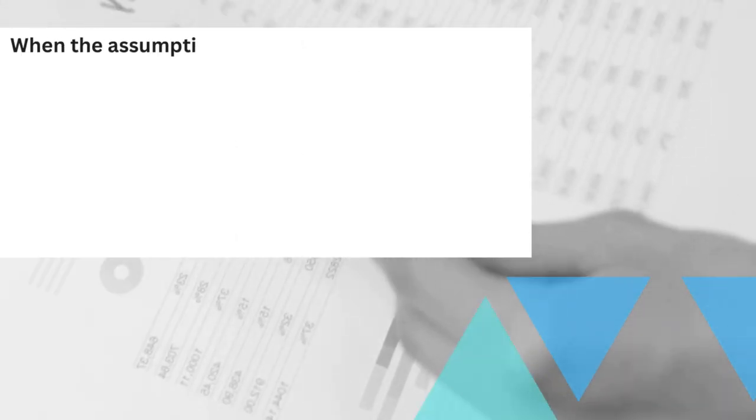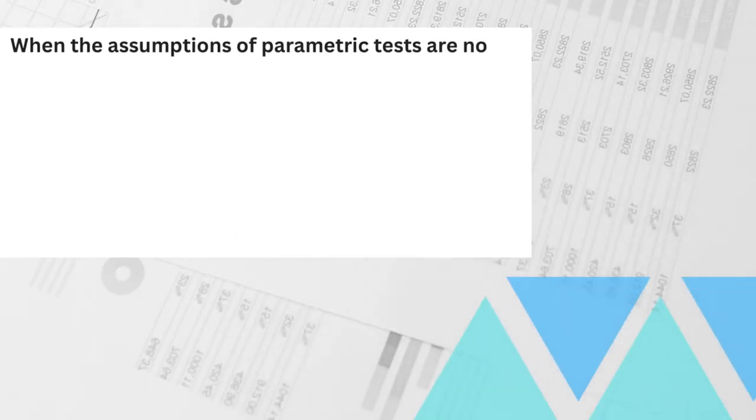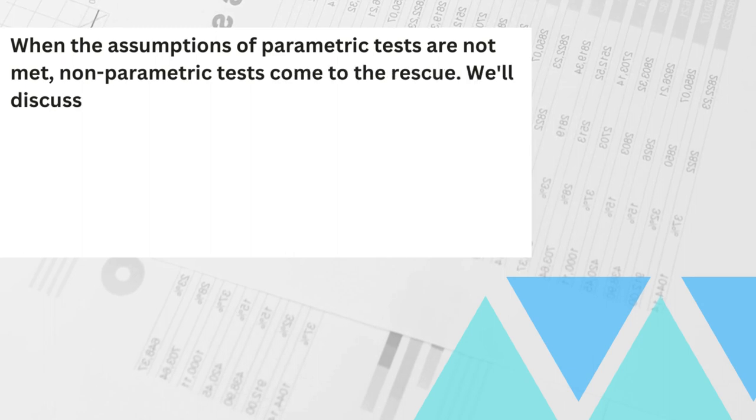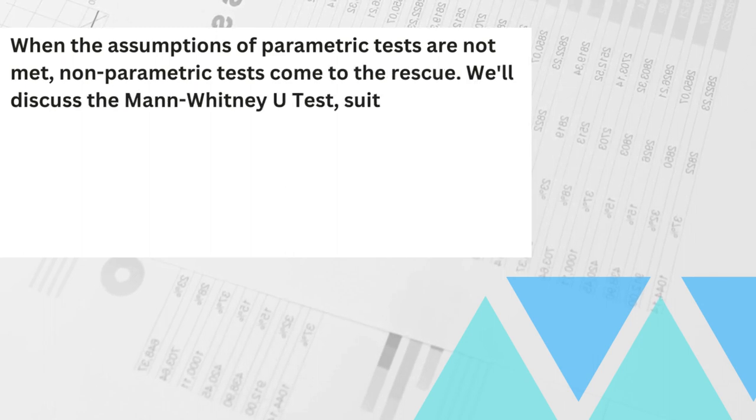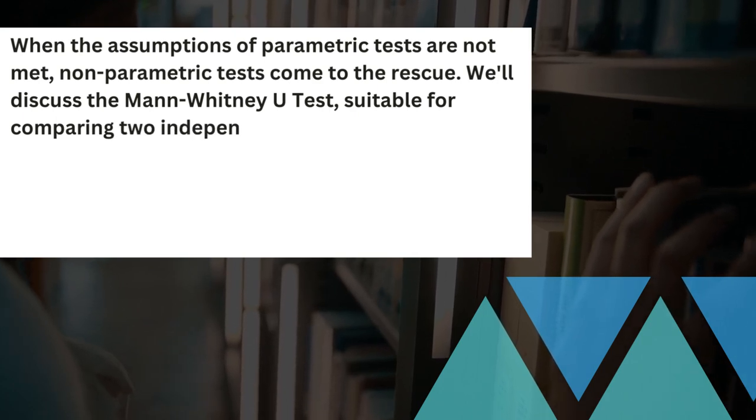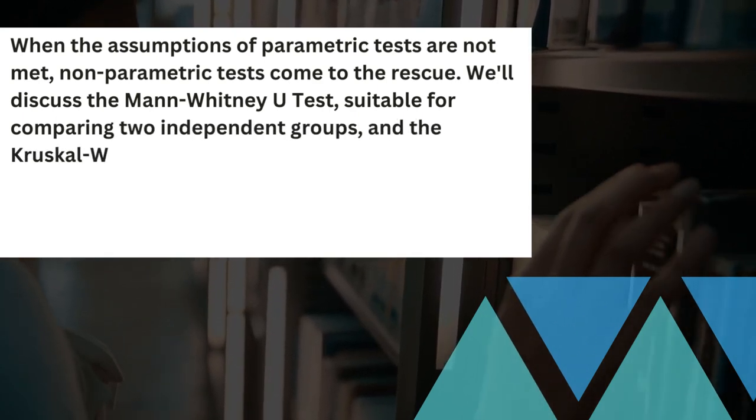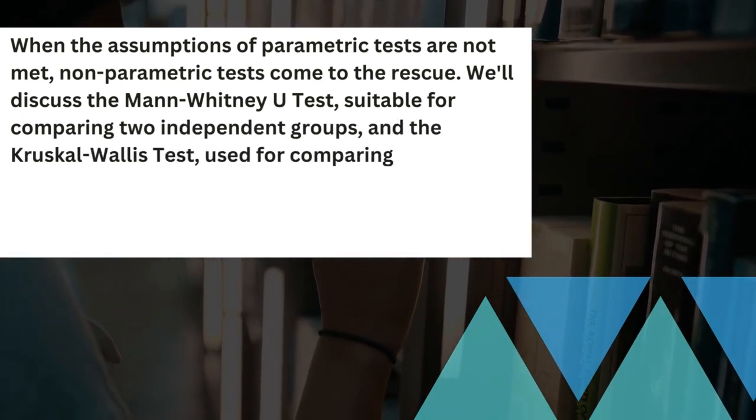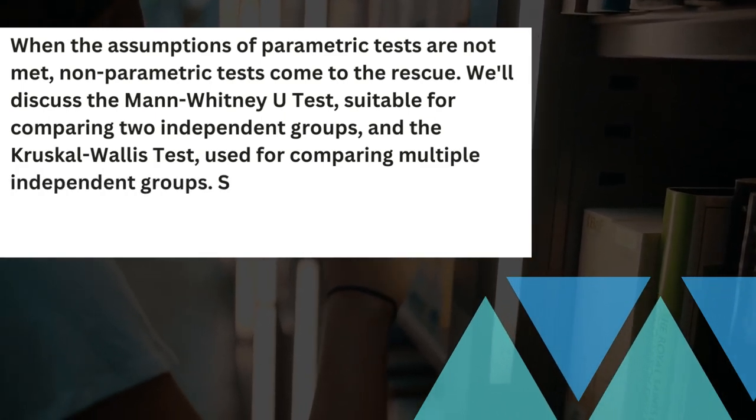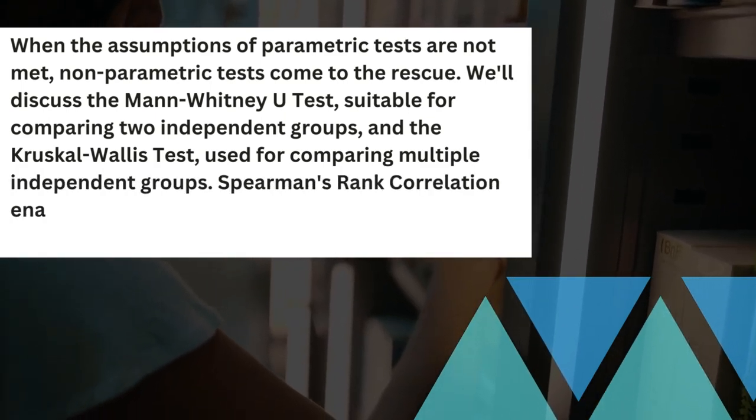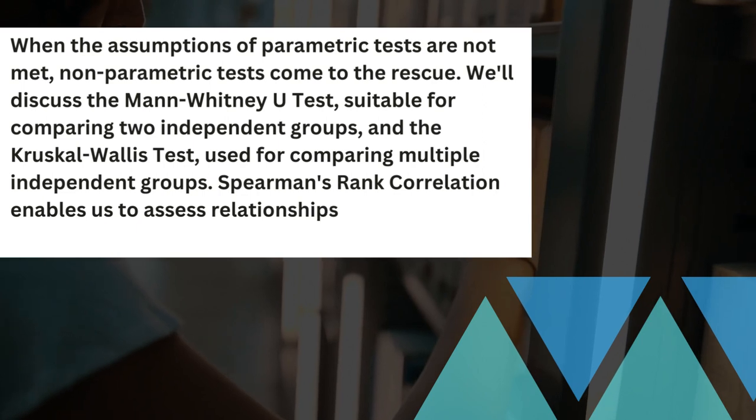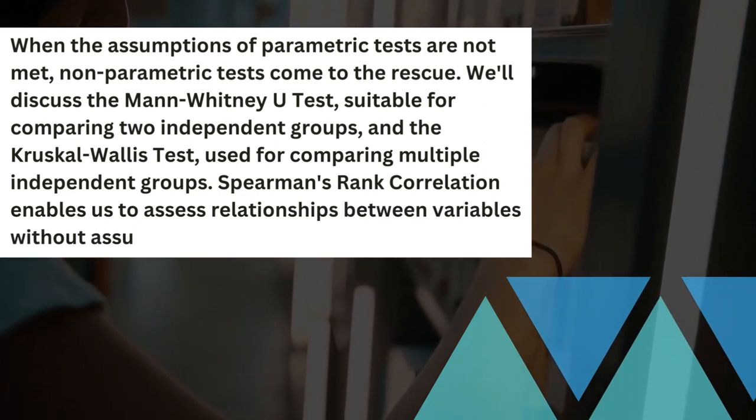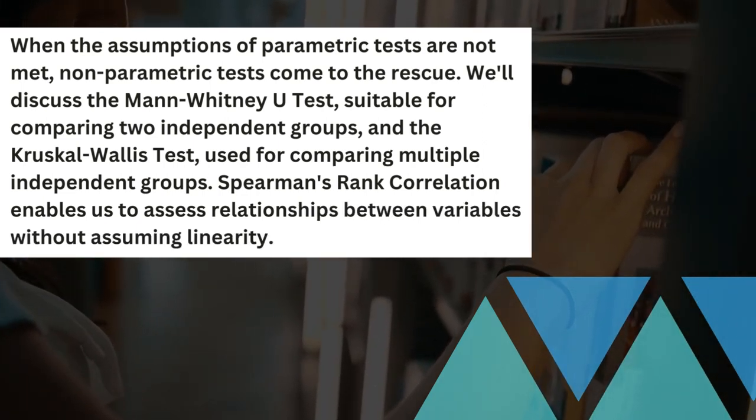When the assumptions of parametric tests are not met, non-parametric tests come to the rescue. We'll discuss the Mann-Whitney U test, suitable for comparing two independent groups, and the Kruskal-Wallis test, used for comparing multiple independent groups. Spearman's Rank Correlation enables us to assess relationships between variables without assuming linearity.